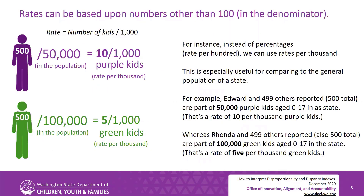Rates can be based upon numbers other than 100 in the denominator. Instead of percentages, rates per 100, we can use rates per 1,000. This is especially useful for comparing to the general population of a state. For example, Edward and 499 others reported — 500 total — are part of 50,000 purple kids aged 0 through 17 in the state. That's a rate of 10 per 1,000 purple kids. Whereas Rhonda and 499 others — also 500 total — are part of 100,000 green kids aged 0 through 17 in the state. That's a rate of 5 per 1,000 green kids.